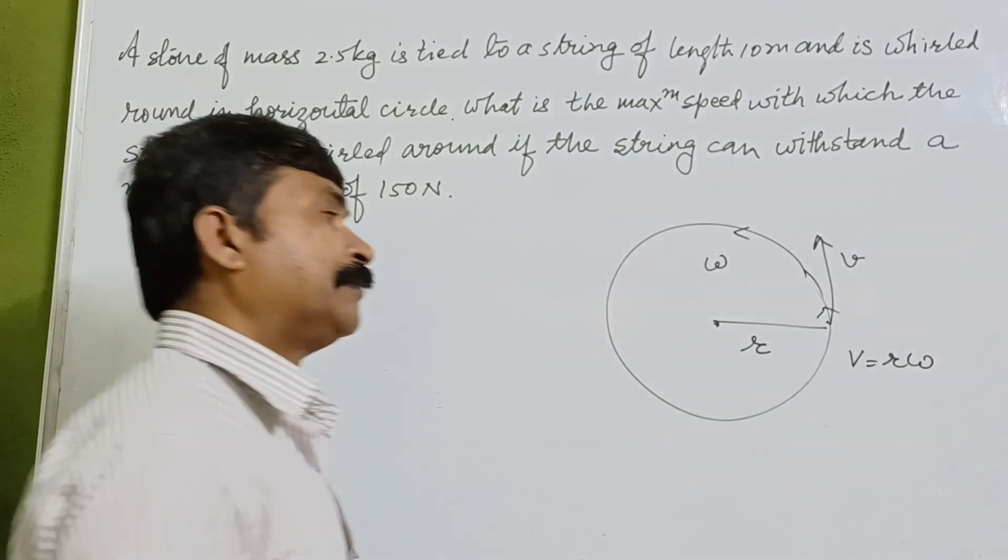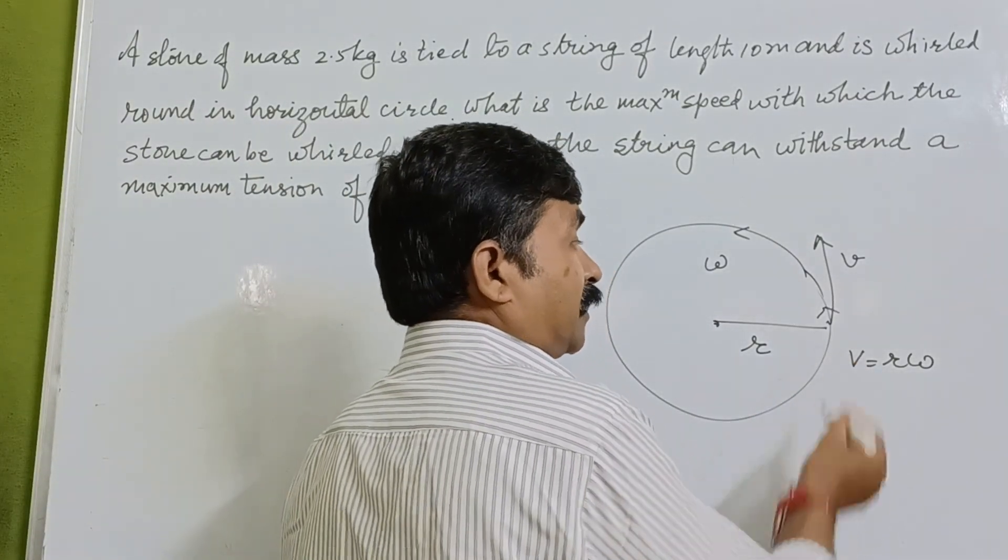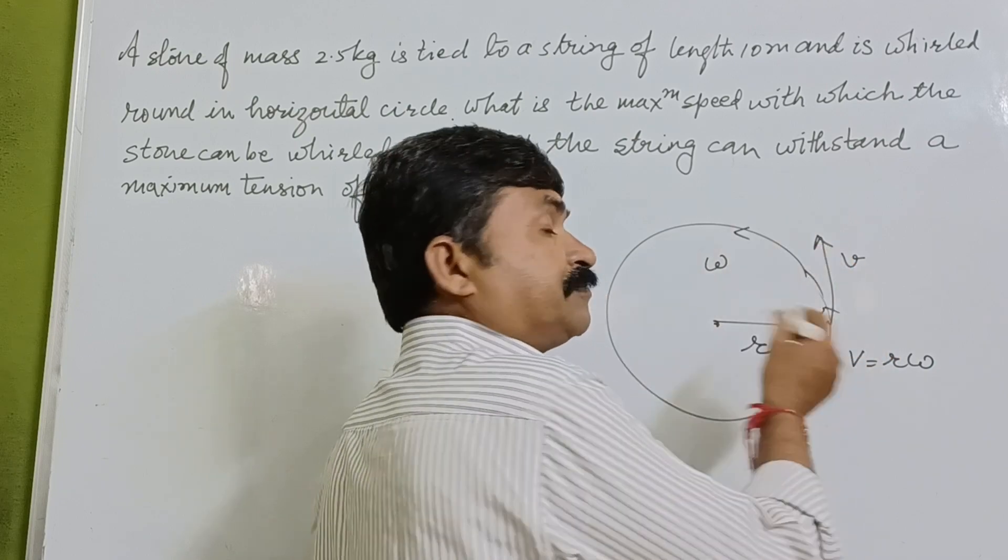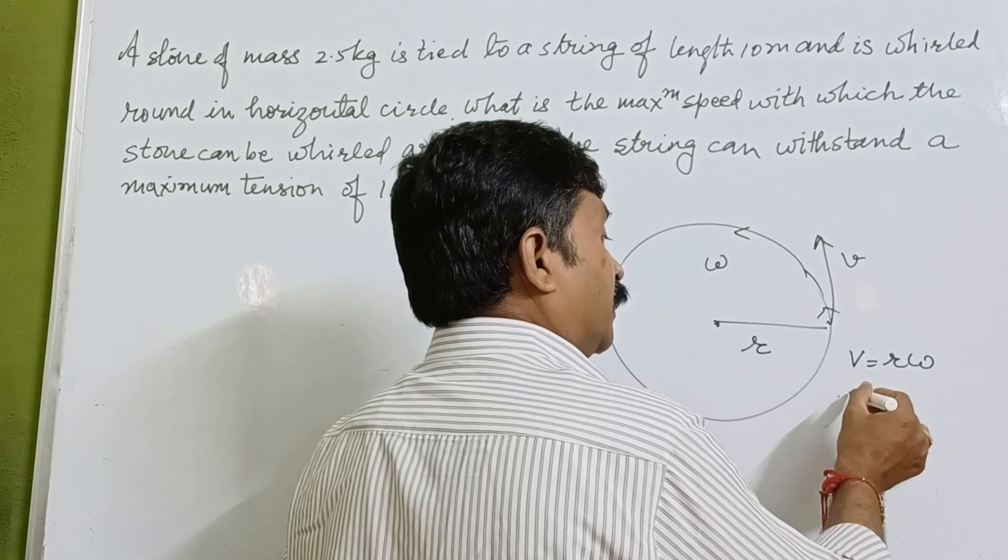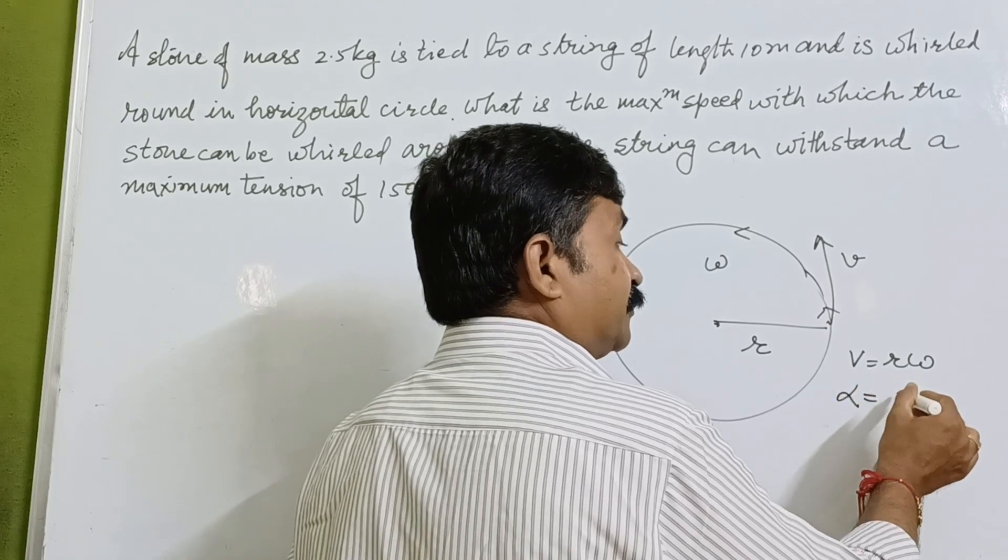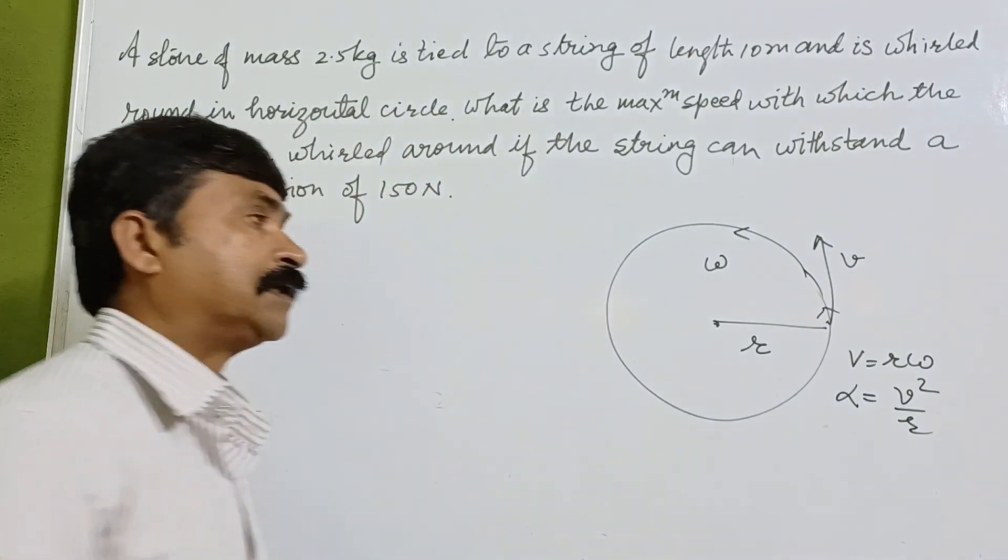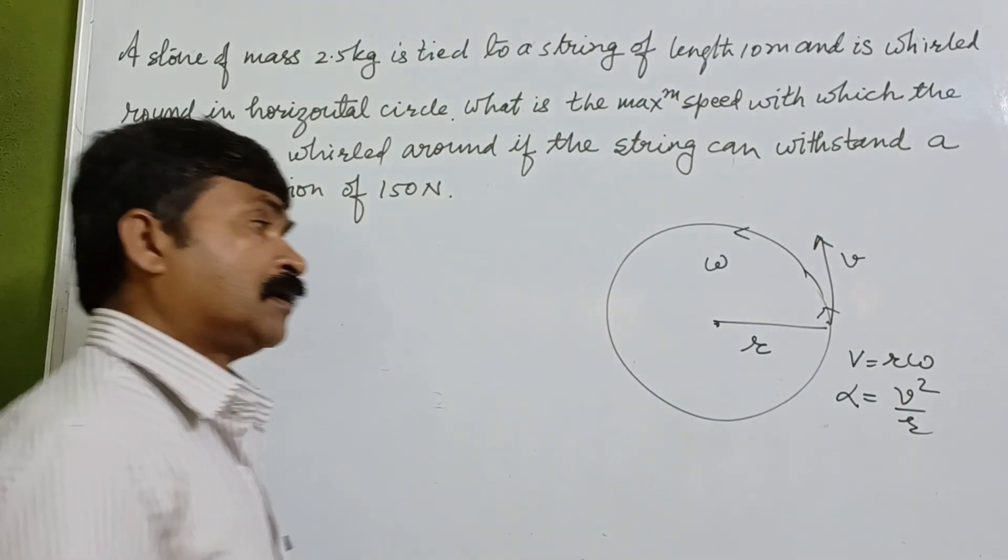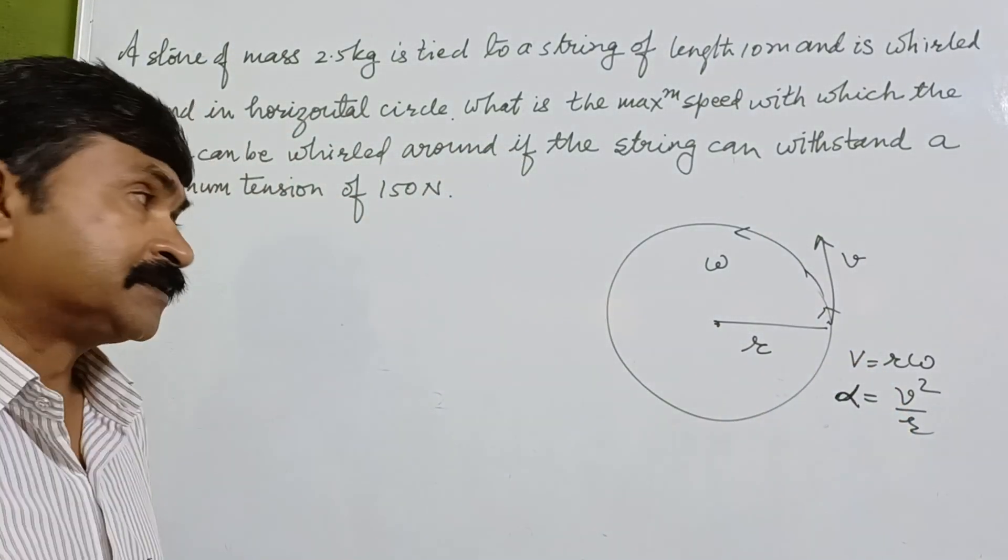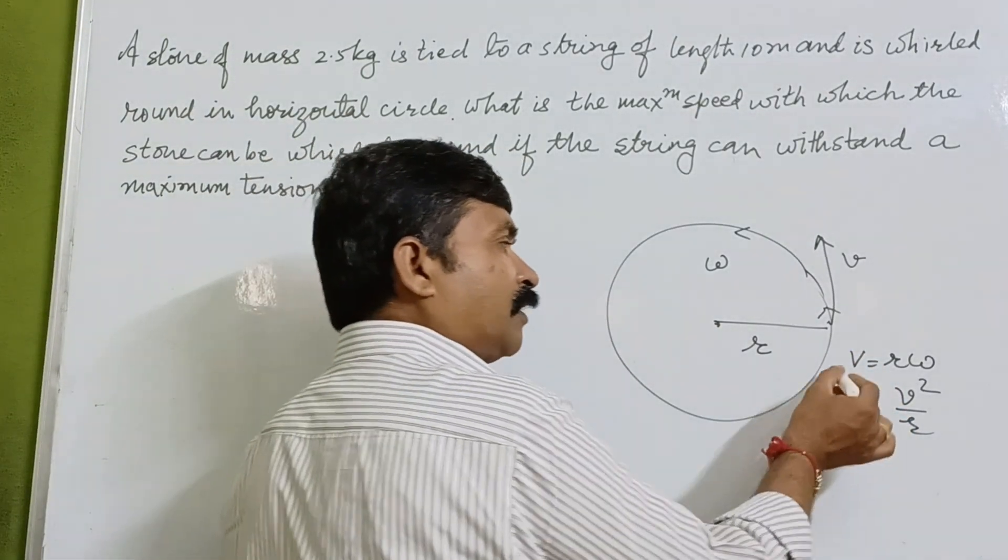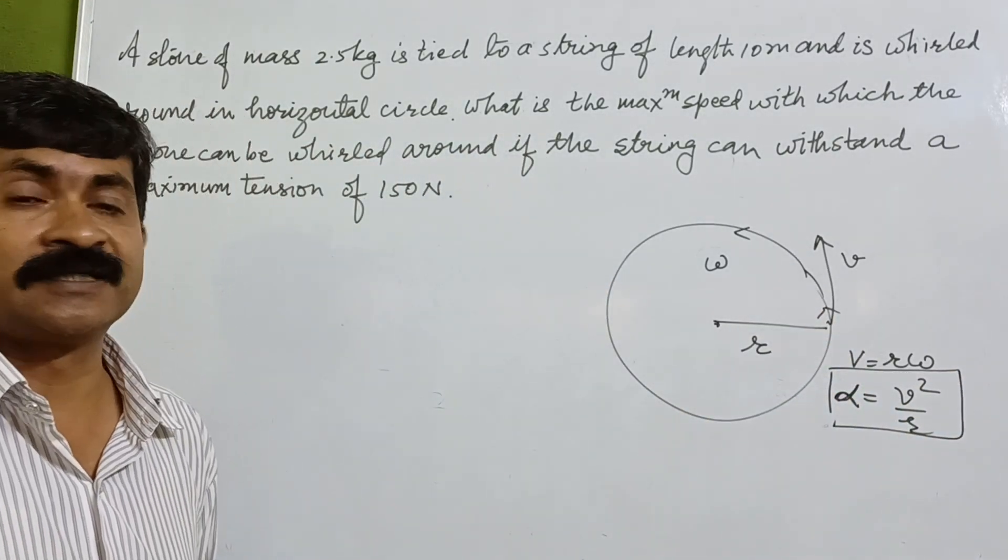And after that, if we go on the acceleration, because of the angular velocity, we are having a relation - acceleration alpha, which will be given by v square r. So if we see the acceleration, this acceleration which we call it as a centripetal acceleration.